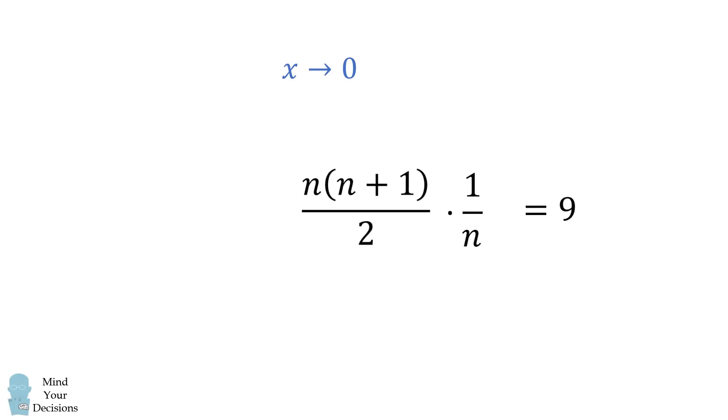We then want to simplify this. Now the n terms will cancel. So we have n plus 1 all over 2, and that's equal to 9. From here, we just need to solve for n. We multiply both sides of the equation by 2. 2 multiplied by 9 is equal to 18. We then subtract 1 from both sides of the equation. So n is equal to 18 minus 1, which is equal to 17. And that's the answer.